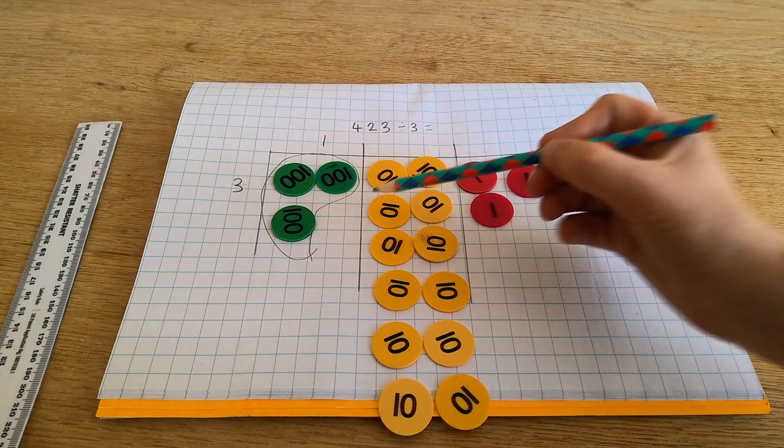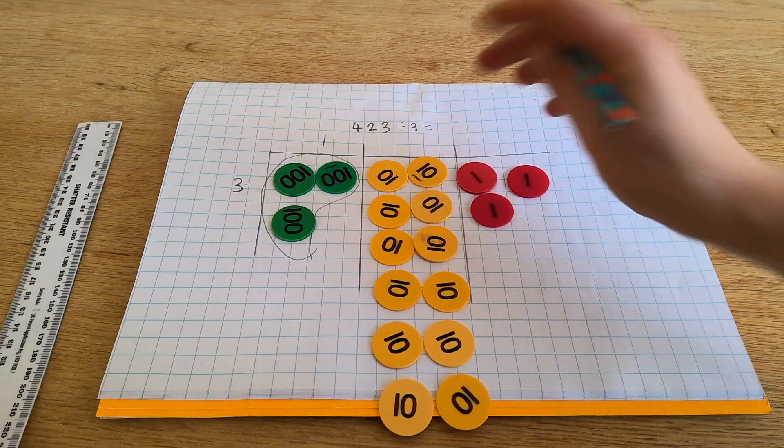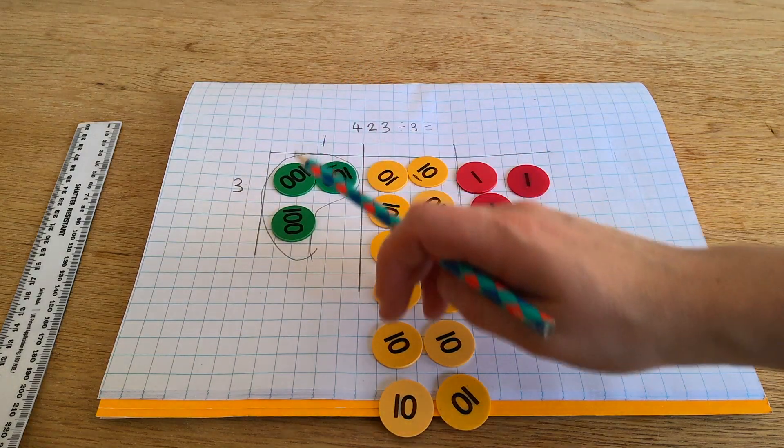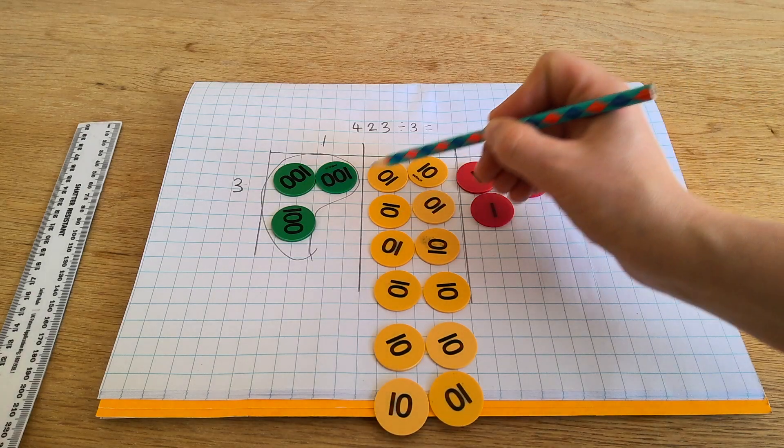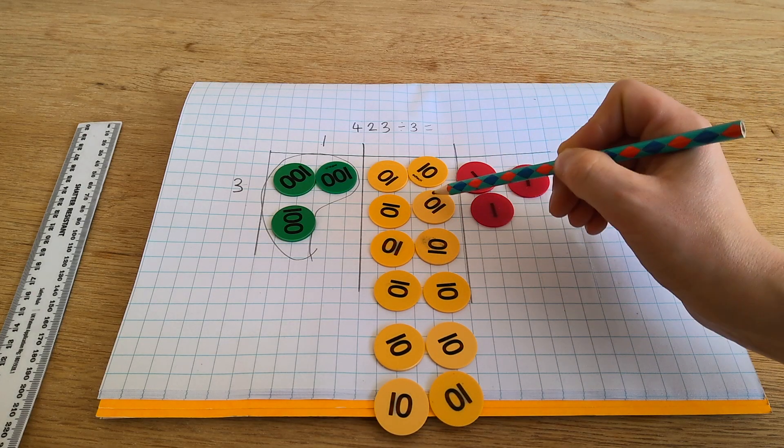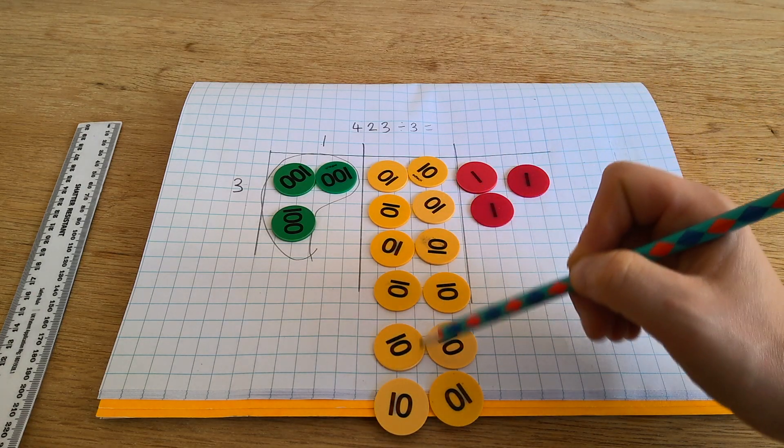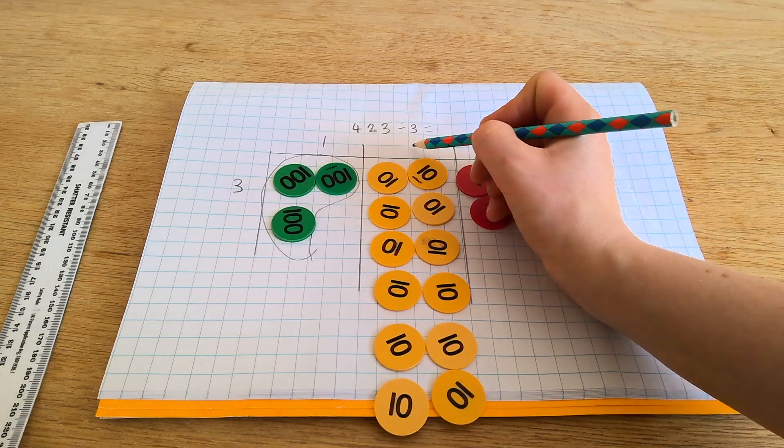Then I'm looking for how many groups of 3 tens in my 2, 4, 6, 8, 10, 12 tens. I've got 1 group, 2 groups, 3 groups, 4 groups of 3 tens.